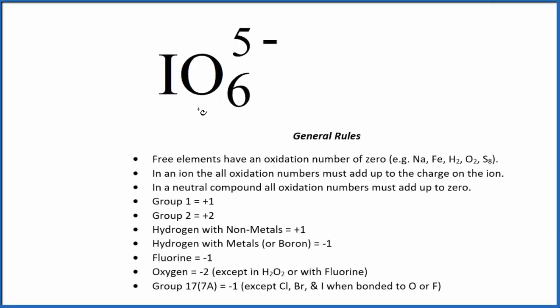Let's find the oxidation numbers here for each element in IO₆⁵⁻. This is an ion. We have the negative charge up here.